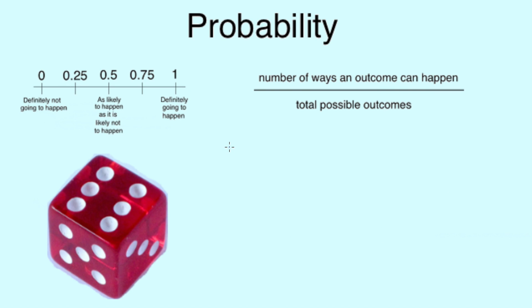Now the way we work out probability is the number of ways an outcome can happen divided by the total possible outcomes. If we take a dice for example, we want to roll a 3. The number of ways this can happen is 1 because there is only 1 3 on any regular dice.